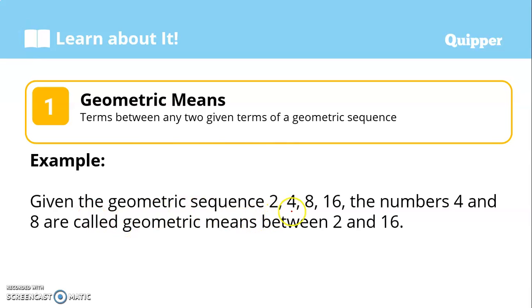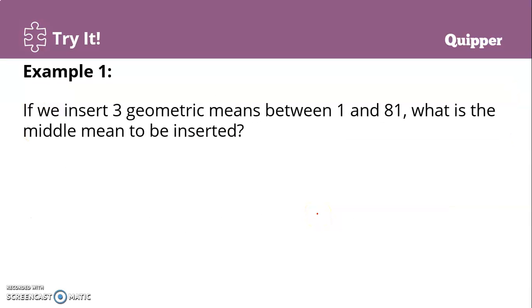For example, given the geometric sequence 2, 4, 8, 16 — the numbers 4 and 8 are called geometric means between 2 and 16. These are the terms between 2 and 16, so they are called geometric means.